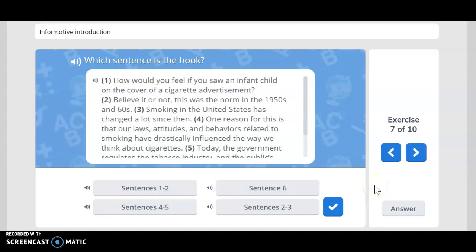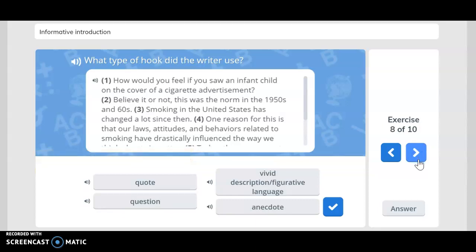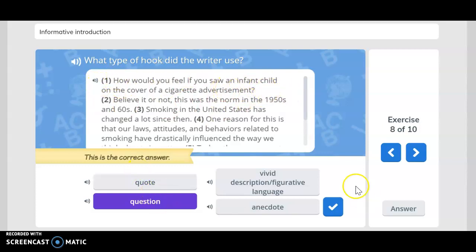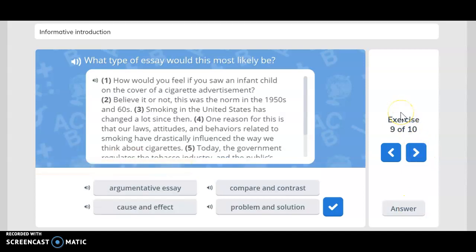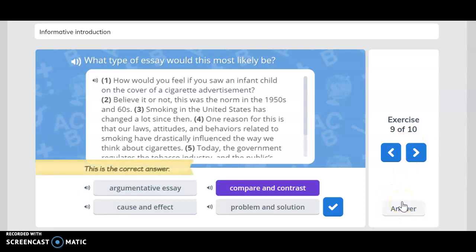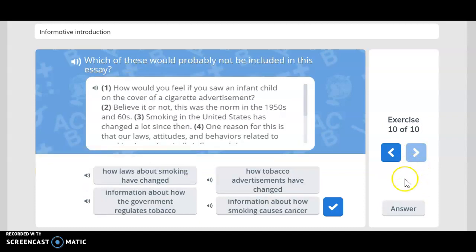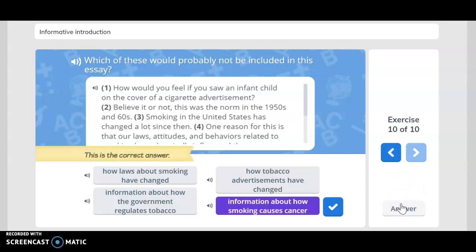So which sentences is the hook? You said sentence one and two. You are correct. What type of hook did the writer use? You said question. You are correct. You started off the text with a question - that's sentence one. What type of essay would this most likely be? Compare and contrast. And which of these will probably not be included in this essay? If you said the last one, you are correct.